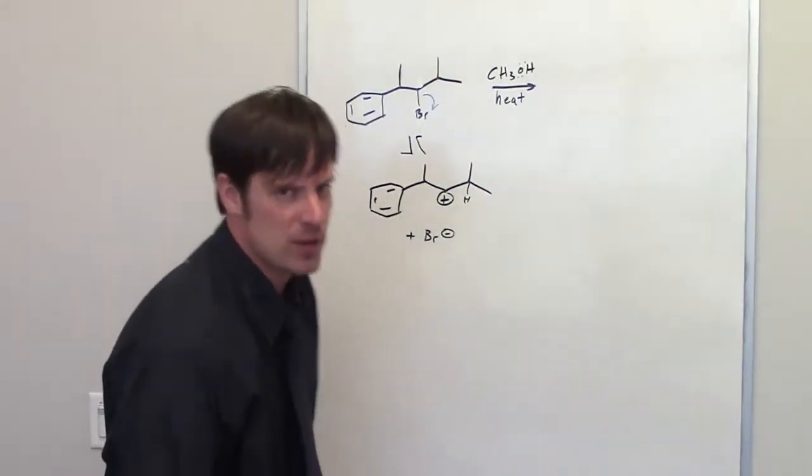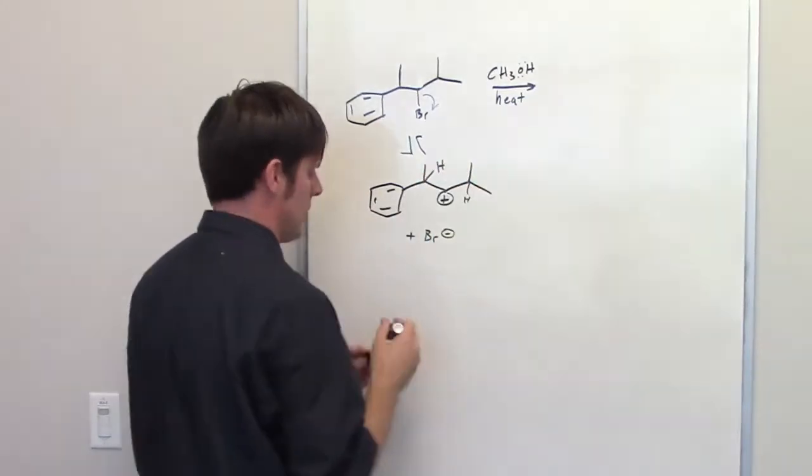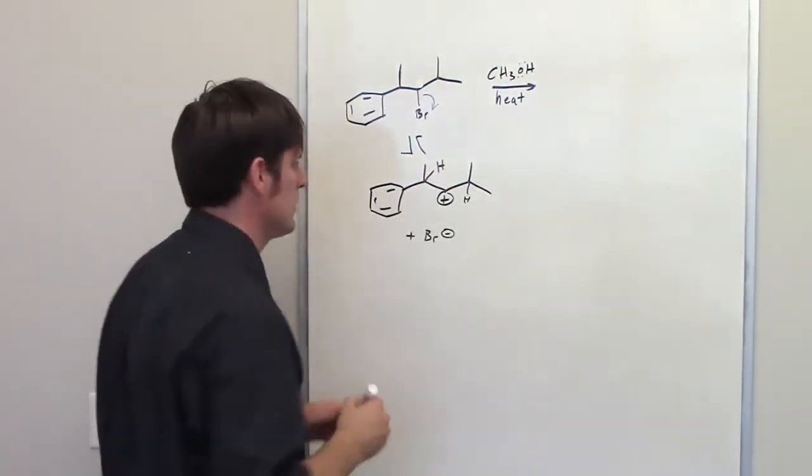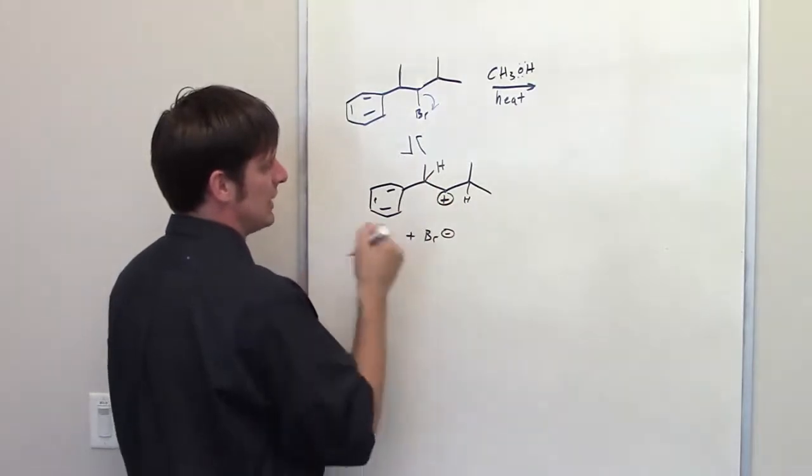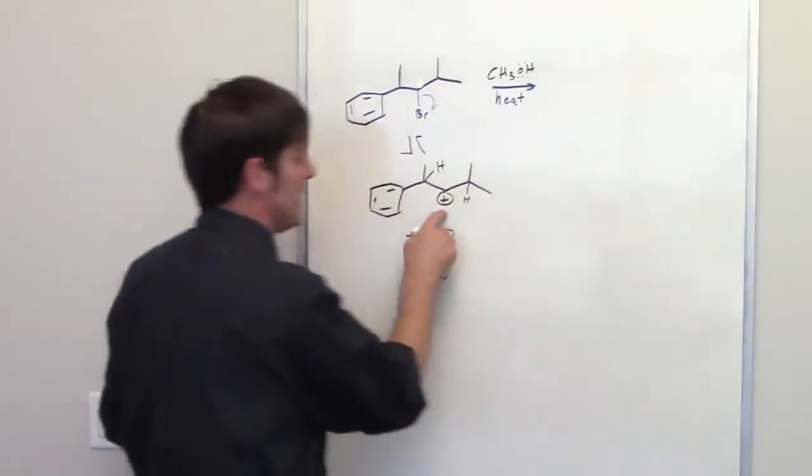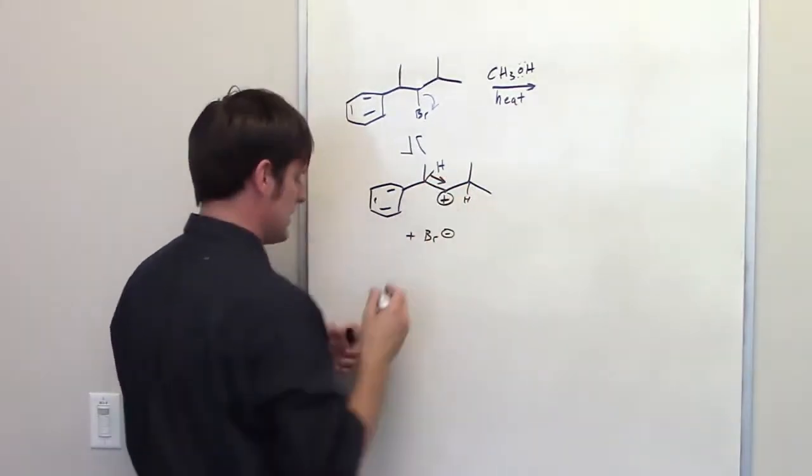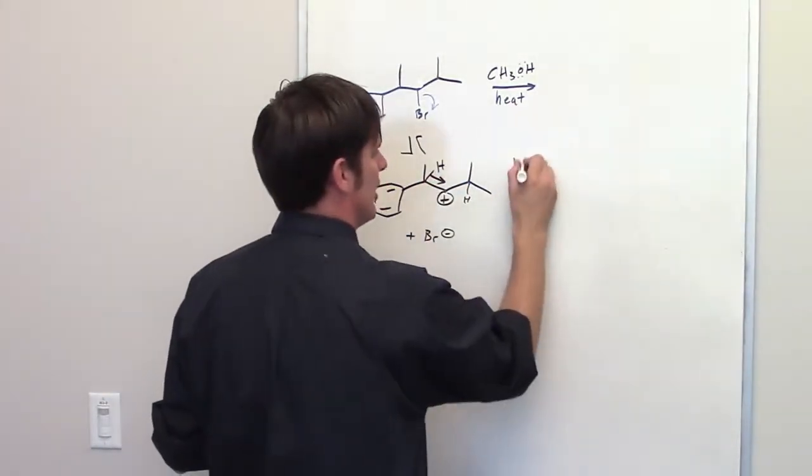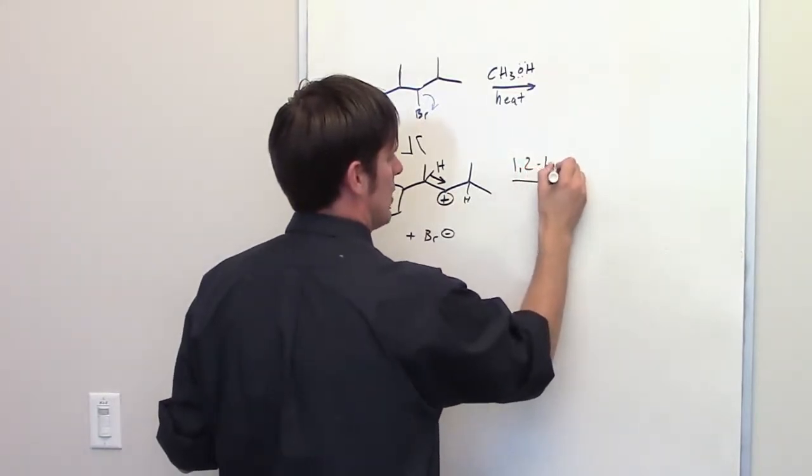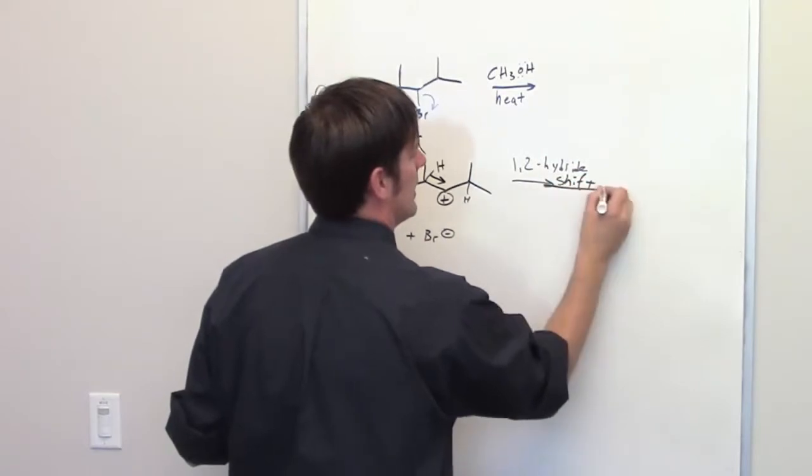But is there a better scenario than that? Absolutely. I've got a hydrogen over here, it's not drawn but implied, there it is. If this hydrogen takes these two electrons and just picks them up and marches over and plugs this hole, and that's really what a carbocation is, it's a hole. Like that, does a 1-2 hydride shift.